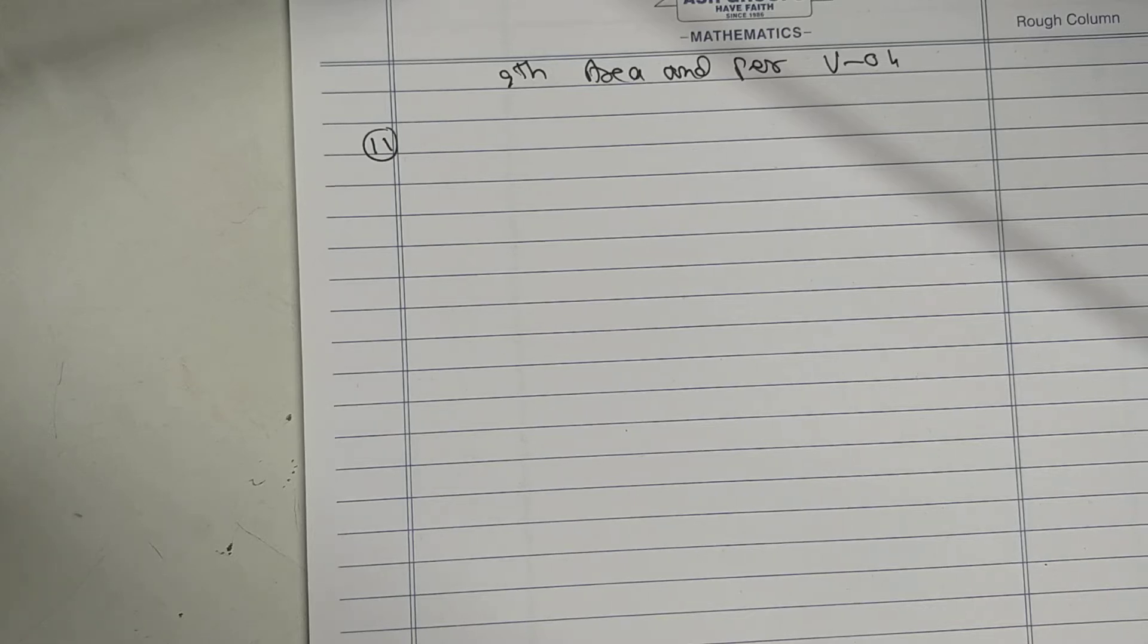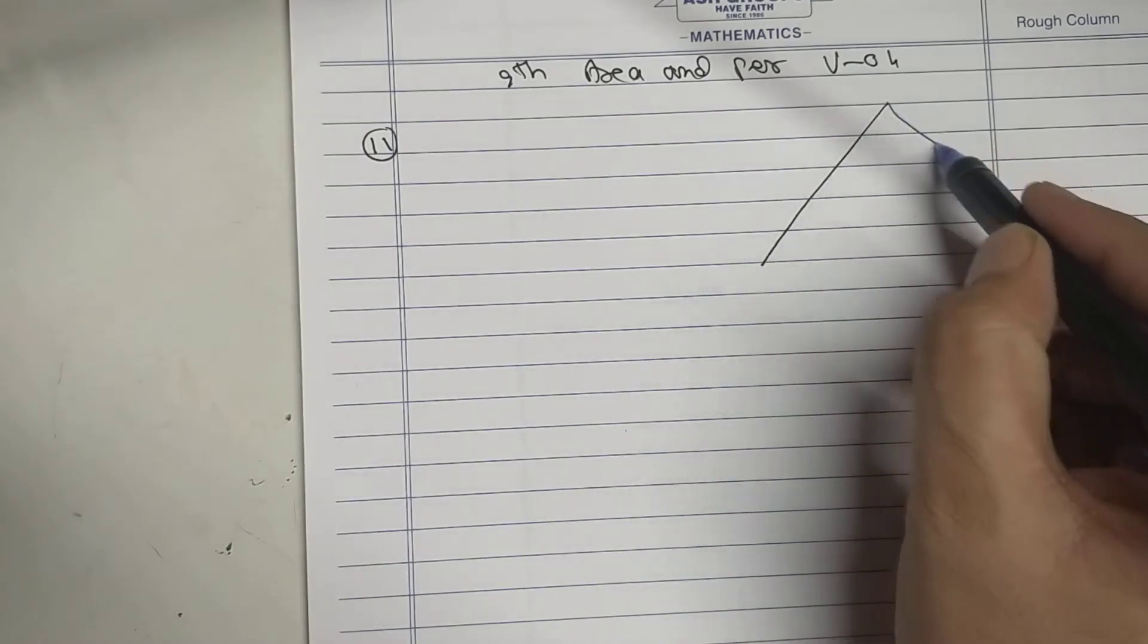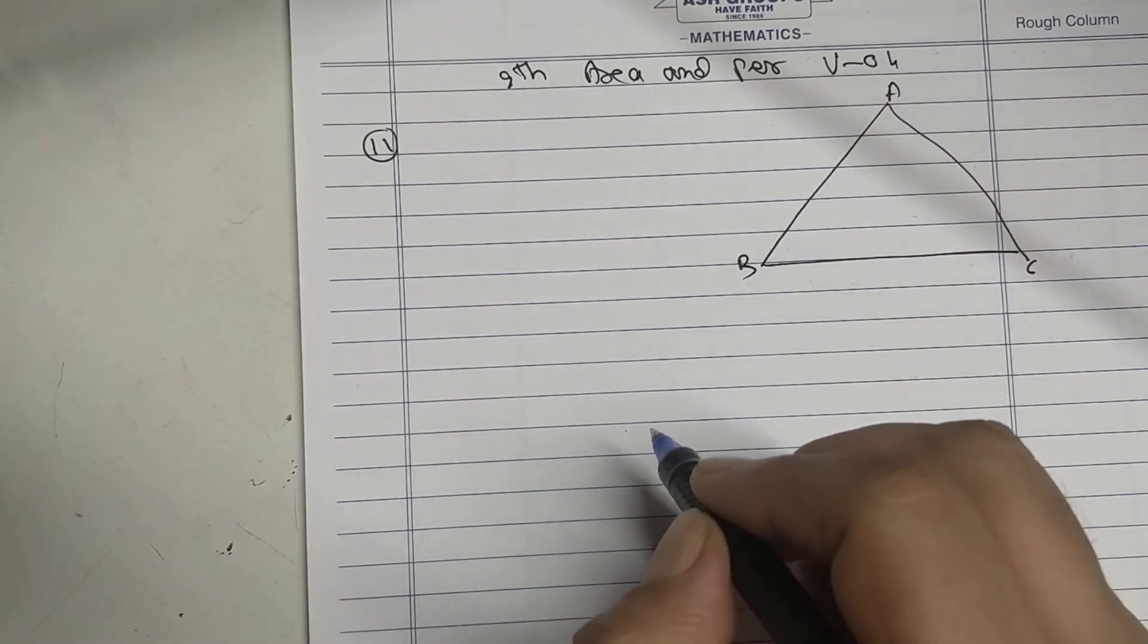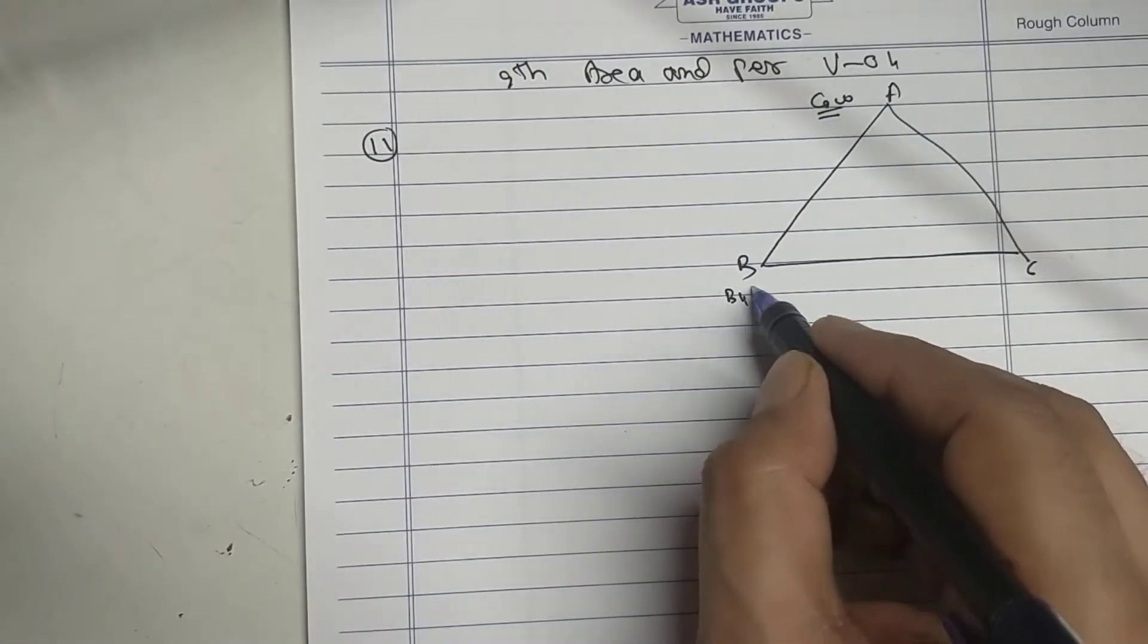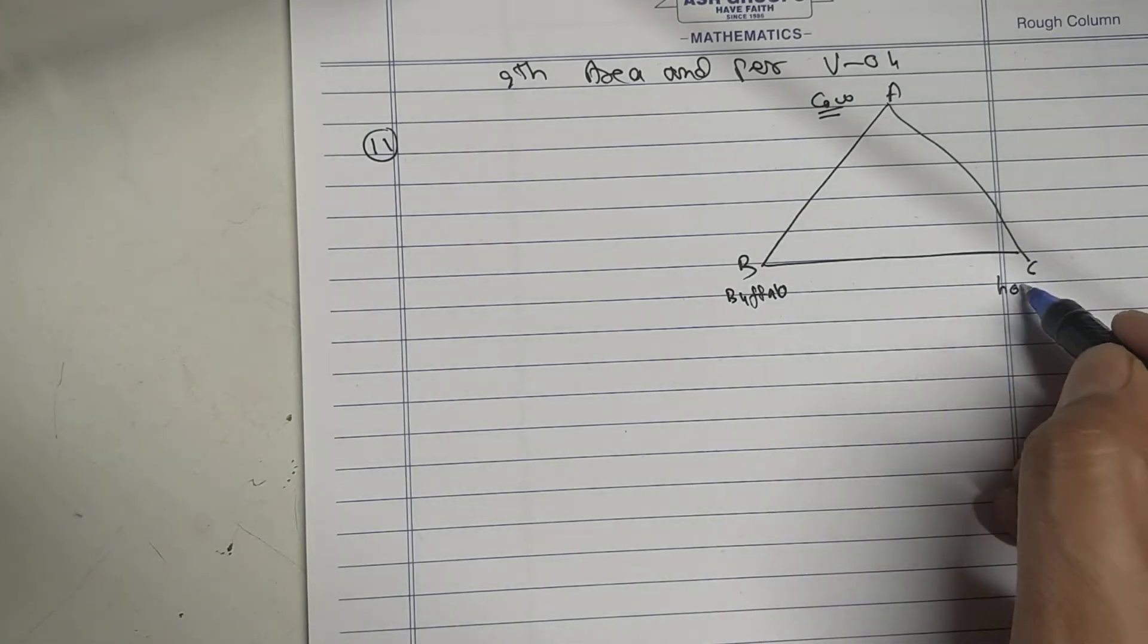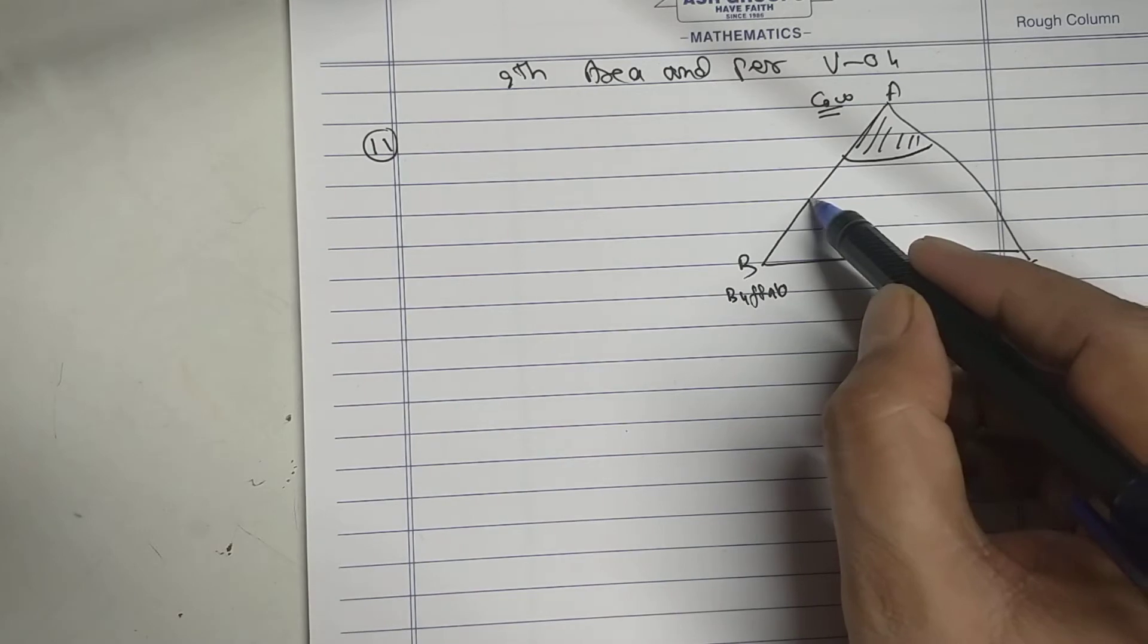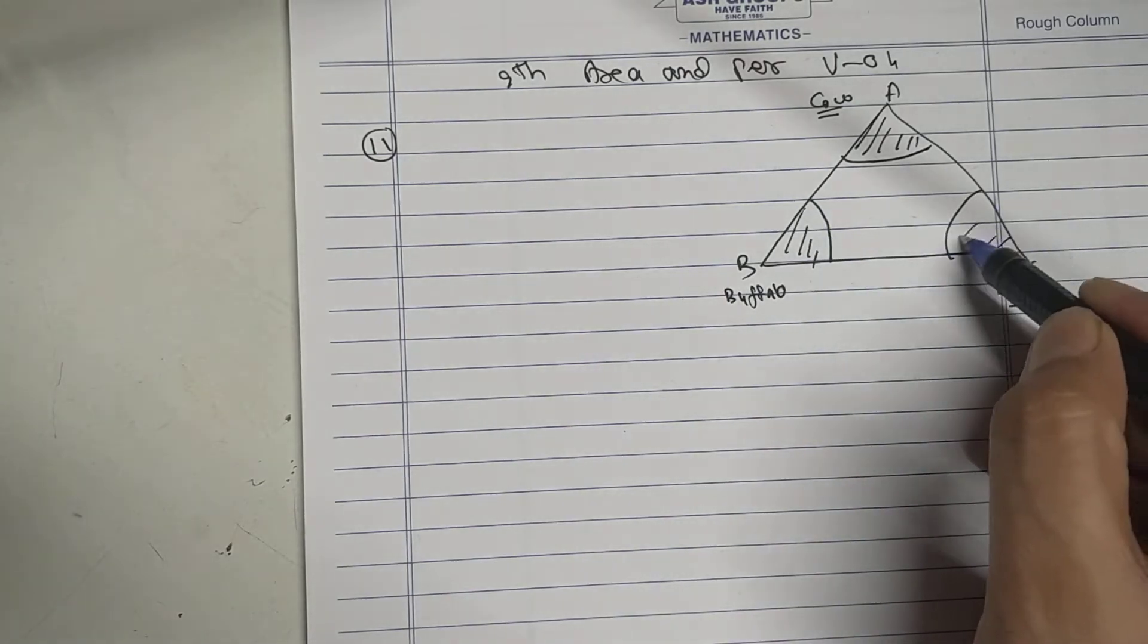Area and perimeter video number four. This is a triangular field ABC. Here is a cow, buffalo, and horse. Cow can graze this area, buffalo can graze this area, and horse can graze this area.